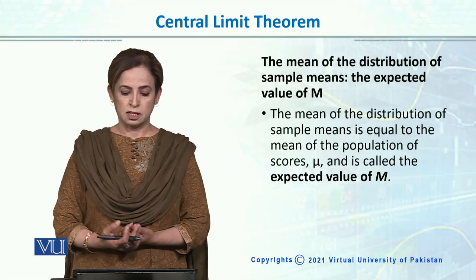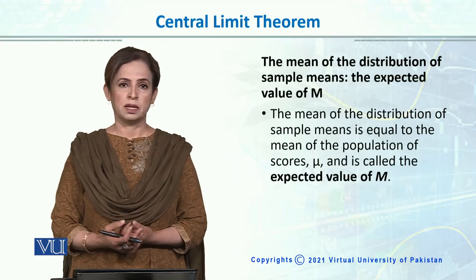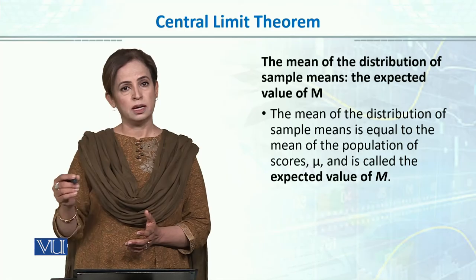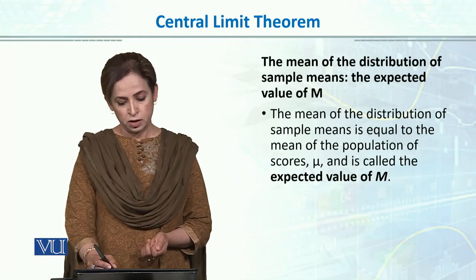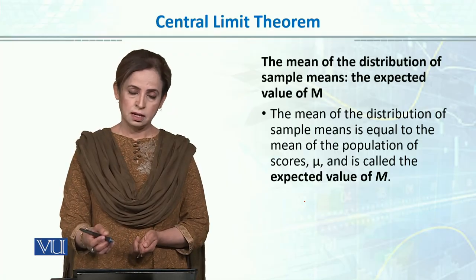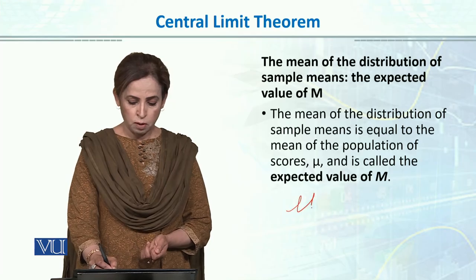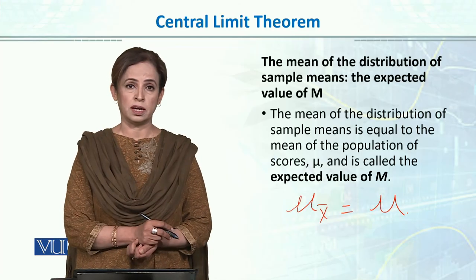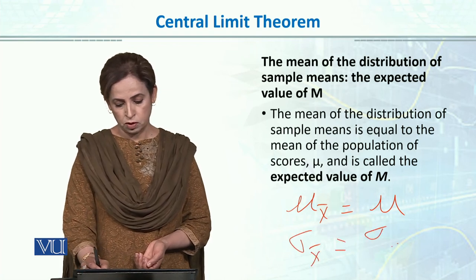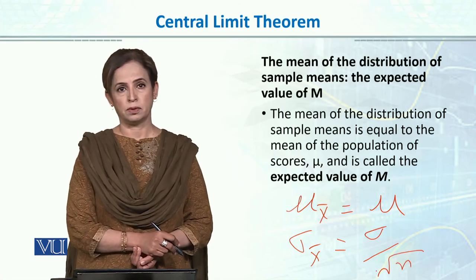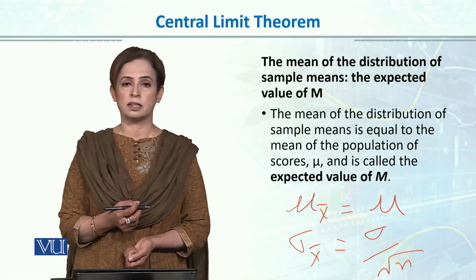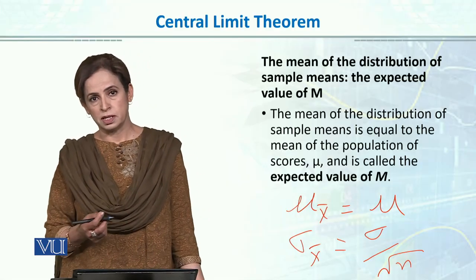The mean of the distribution of sample means is the expected value of M, which equals the population mean μ. Whenever we build a sampling distribution — whether of means, proportions, or standard deviations — we always remember that the mean of all possible sample means equals the population mean. The standard deviation of the sampling distribution equals the population standard deviation divided by √n (σ/√n).